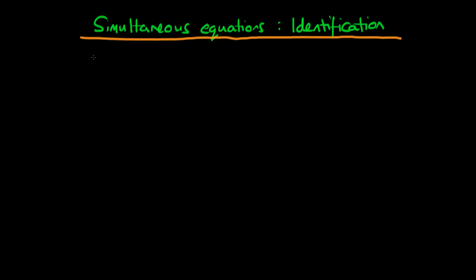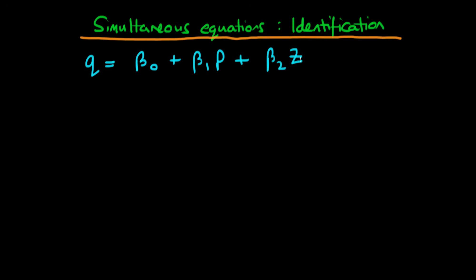The example I'm going to use here is the canonical example which is always given as an example of whether or not equations can be identified in a simultaneous equation framework. We have a supply equation where the quantity supplied Q is equal to beta 0 plus beta 1 times the price plus beta 2 times some exogenous factor Z which influences supply — something like the weather — plus some error term epsilon 1.